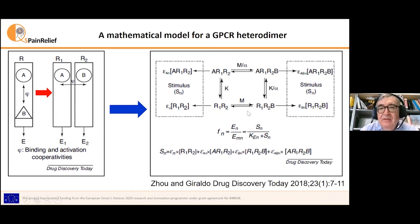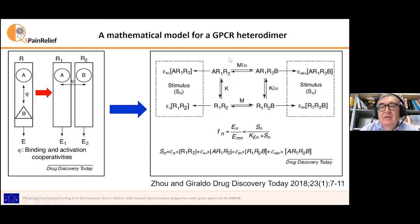On the right, we have a picture of the model. The model is composed of a binding part in the center with four receptor species. The free receptor is R1·R2 — R means receptor, and we use symbols 1 and 2 for the two protomers in the heterodimer — so R1·R2 is the free receptor with no ligand bound. Then we have the singly bound receptor: it can be A·R1·R2, where A is the ligand that binds to protomer R1, or R1·R2·B, where B binds to R2. And then we have the doubly bound receptor with both A bound to R1 and B bound to R2.